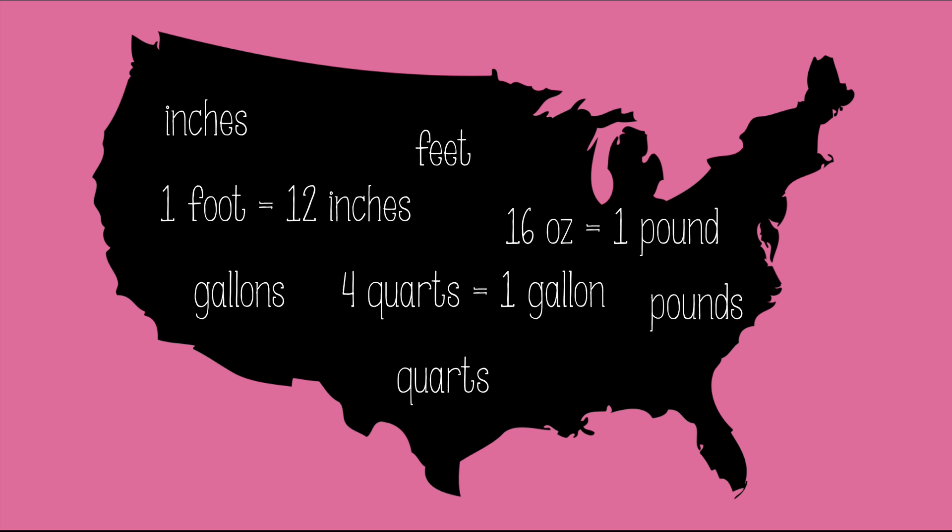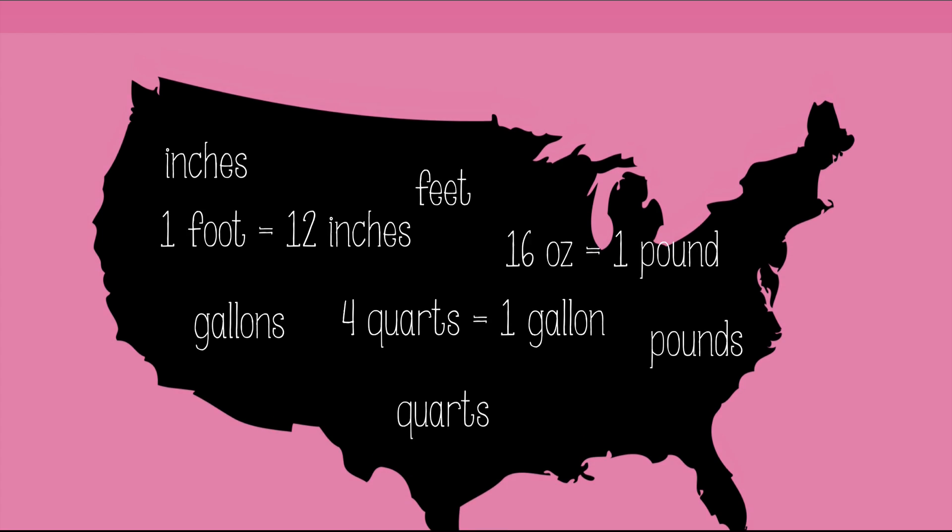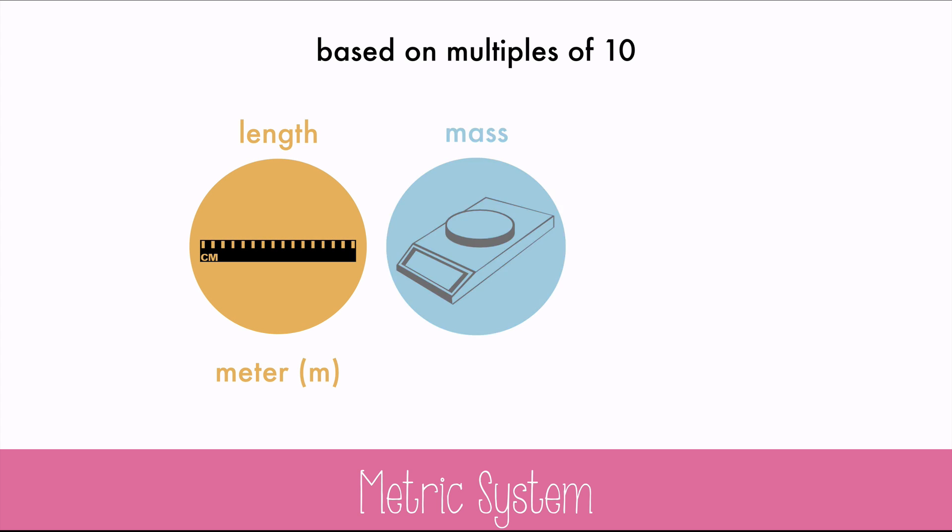To avoid confusion, scientists around the world have adopted the metric system, which is based on multiples of 10. The base unit for measuring length is the meter. The base unit for measuring mass is the gram. And the base unit for volume is the liter.